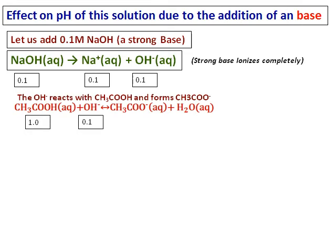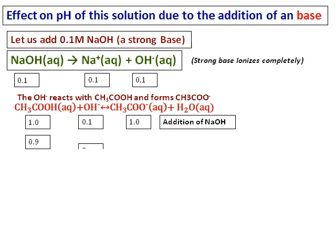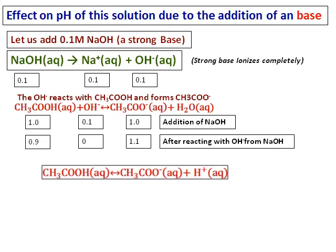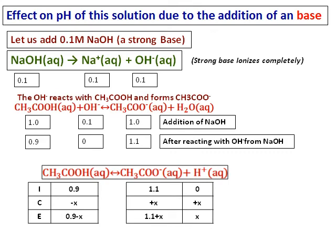This extra acetate ion comes because of the addition of NaOH. After this hydroxide reacts with the acetic acid, I get 1.1 acetate concentration. Set up the ICE table again with the new values of acetate and acetic acid and calculate the pH and the pH is 4.83.